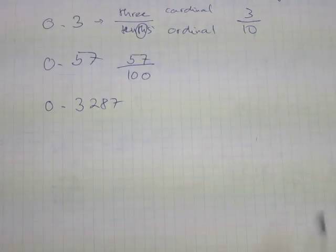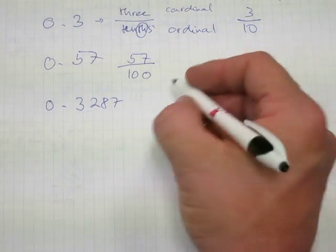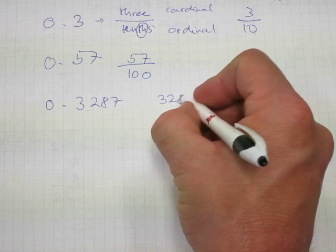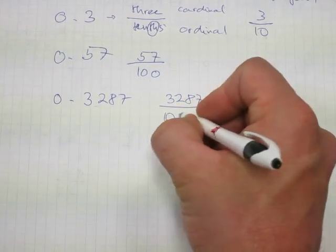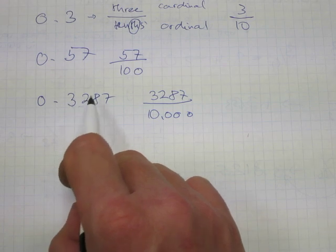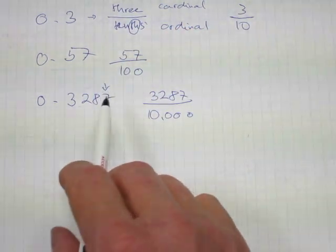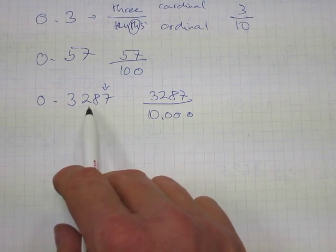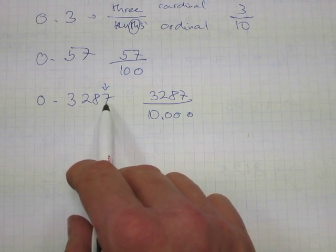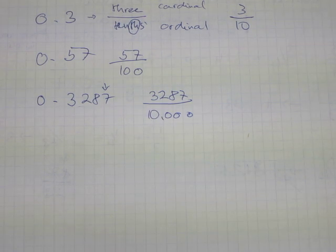Three thousand two hundred eighty-seven ten-thousandths. This is how you read this decimal. So it's gonna be 3,287. And the last digit, the seven, is on the ten, hundred, thousand, ten-thousand place value. So the fraction is that you can make out of it, 3,287 over 10,000.